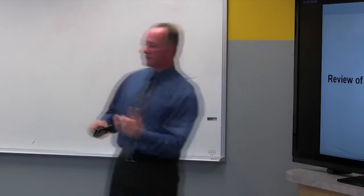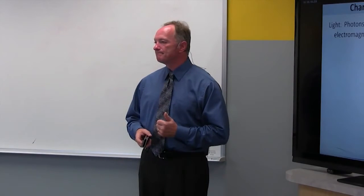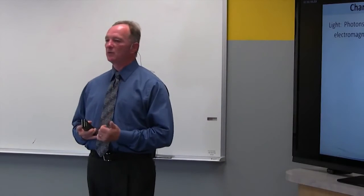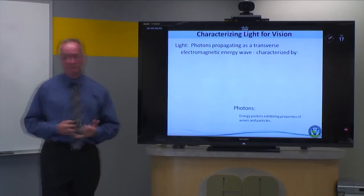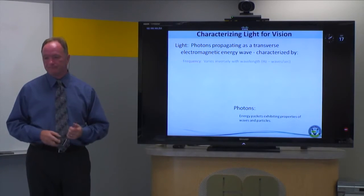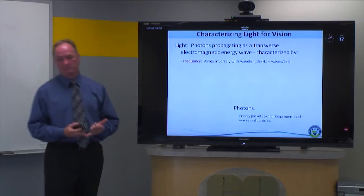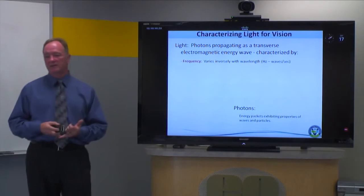Now let's switch gears and talk about light for vision illumination. You characterize light in several different ways. Light is just a series of photons that propagate as an electromagnetic wave. You can characterize it by frequency, which varies inversely with wavelength, or by measured photon intensity — we'll talk about radiometric and photometric characterization of light shortly.